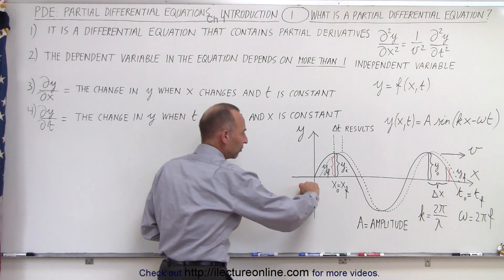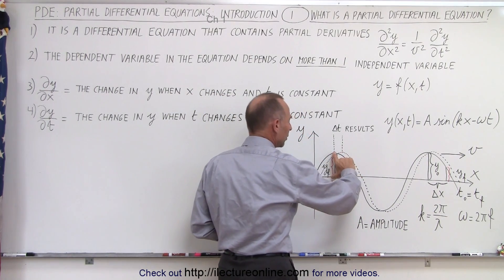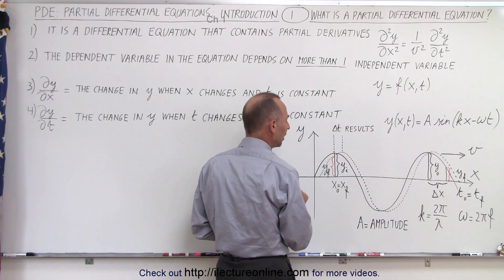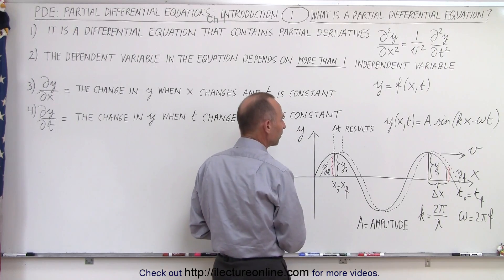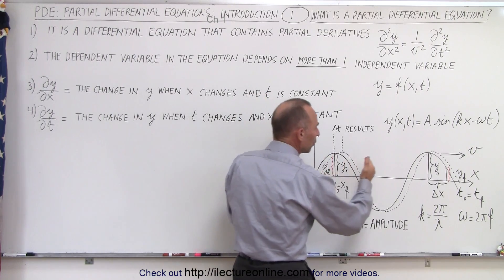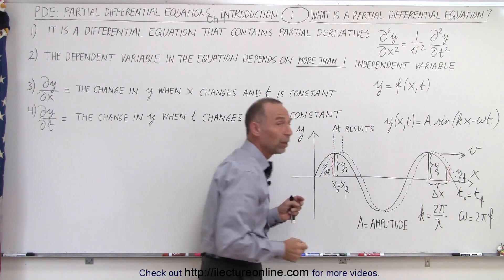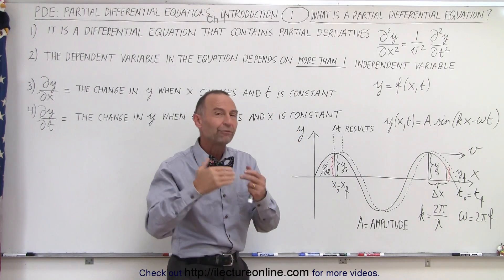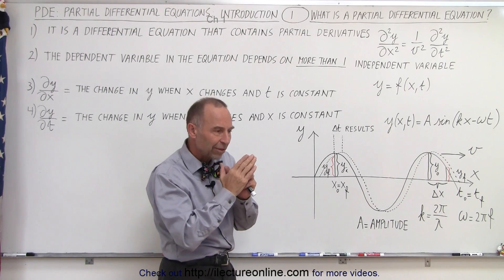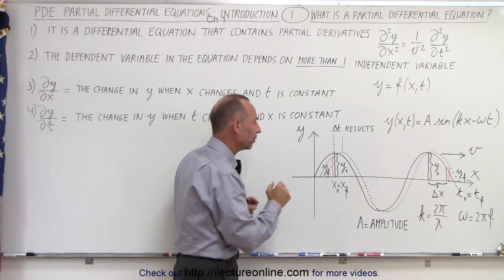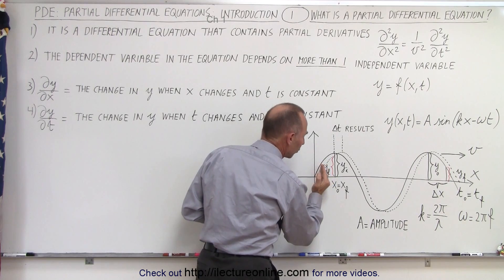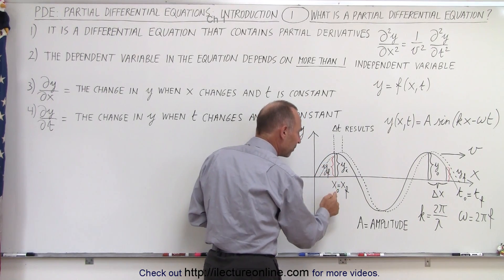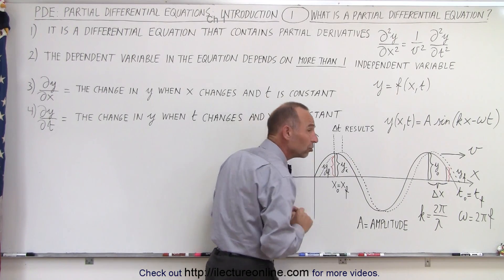Now we imagine this wave, and we take the initial height y sub i — the height at the crest at a moment in time. We allow the wave to move to the right at velocity v. We're keeping x constant and varying t, letting t advance by a small delta t. Notice that the wave then moves to the right, and being at the same x location — keeping x constant — the value of y has changed.